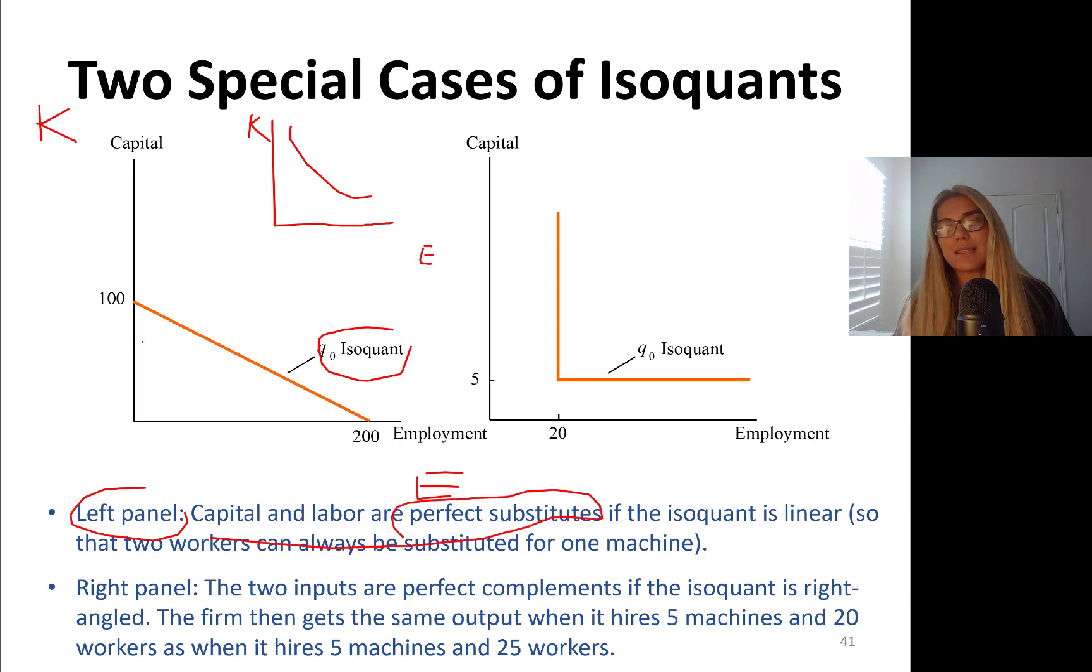That means in this case you can substitute two workers in place of one capital. So that's very interesting. The isoquant is linear, so that two workers can always be substituted for one machine. So how did I find that? The slope, marginal product of labor to marginal product of labor, marginal product of labor, negative marginal product of labor divided by marginal product capital.